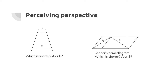Another example of perspective deceiving us: which line is shorter, A or B? You'd think A is longer, but they're exactly the same size. Similarly, in the right diagram, B looks much longer than A because of the context of the parallelogram, but again they're exactly the same size. You really have to be careful with perspective and with using only angle to discriminate different parts of your data visualization.